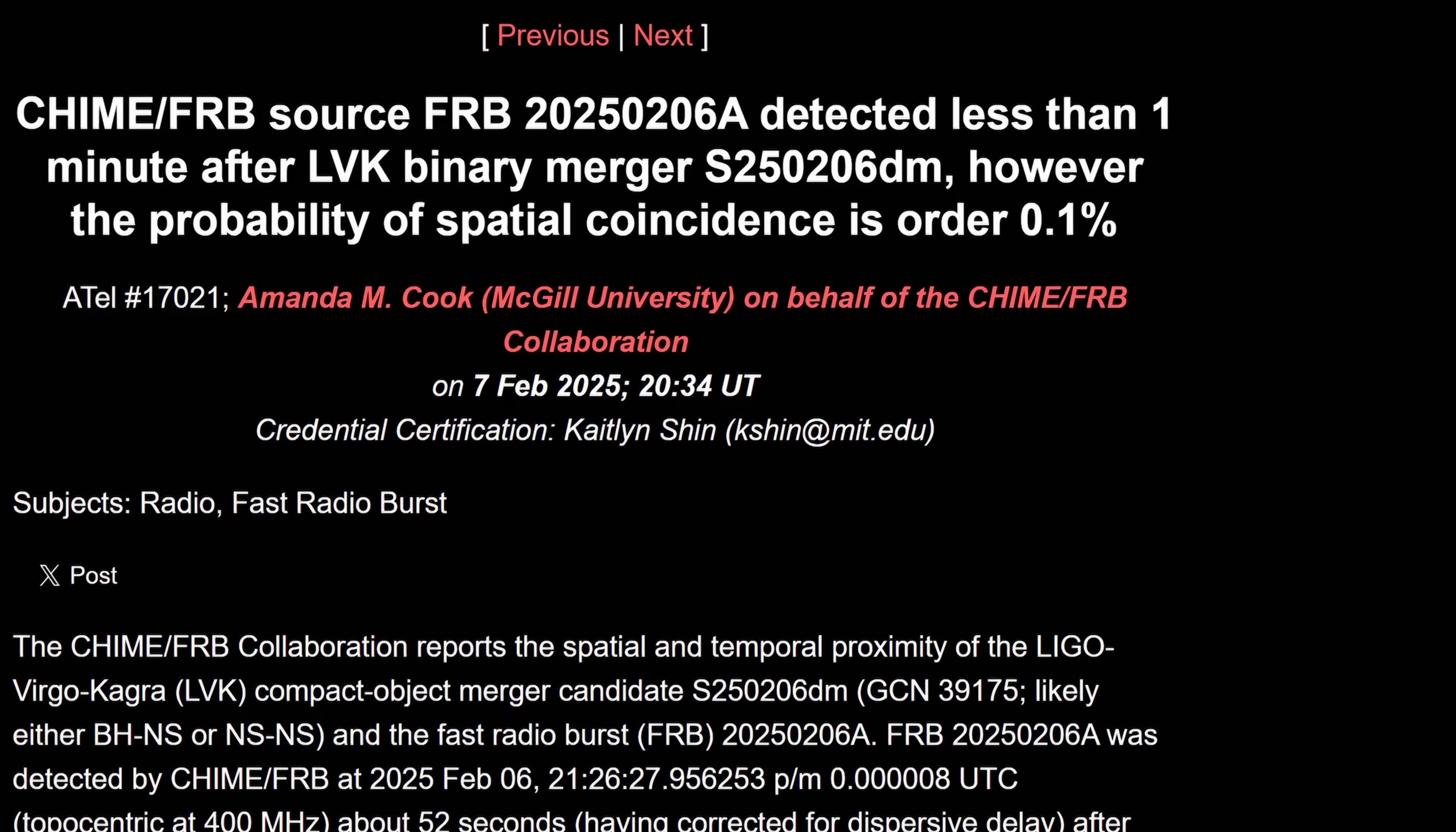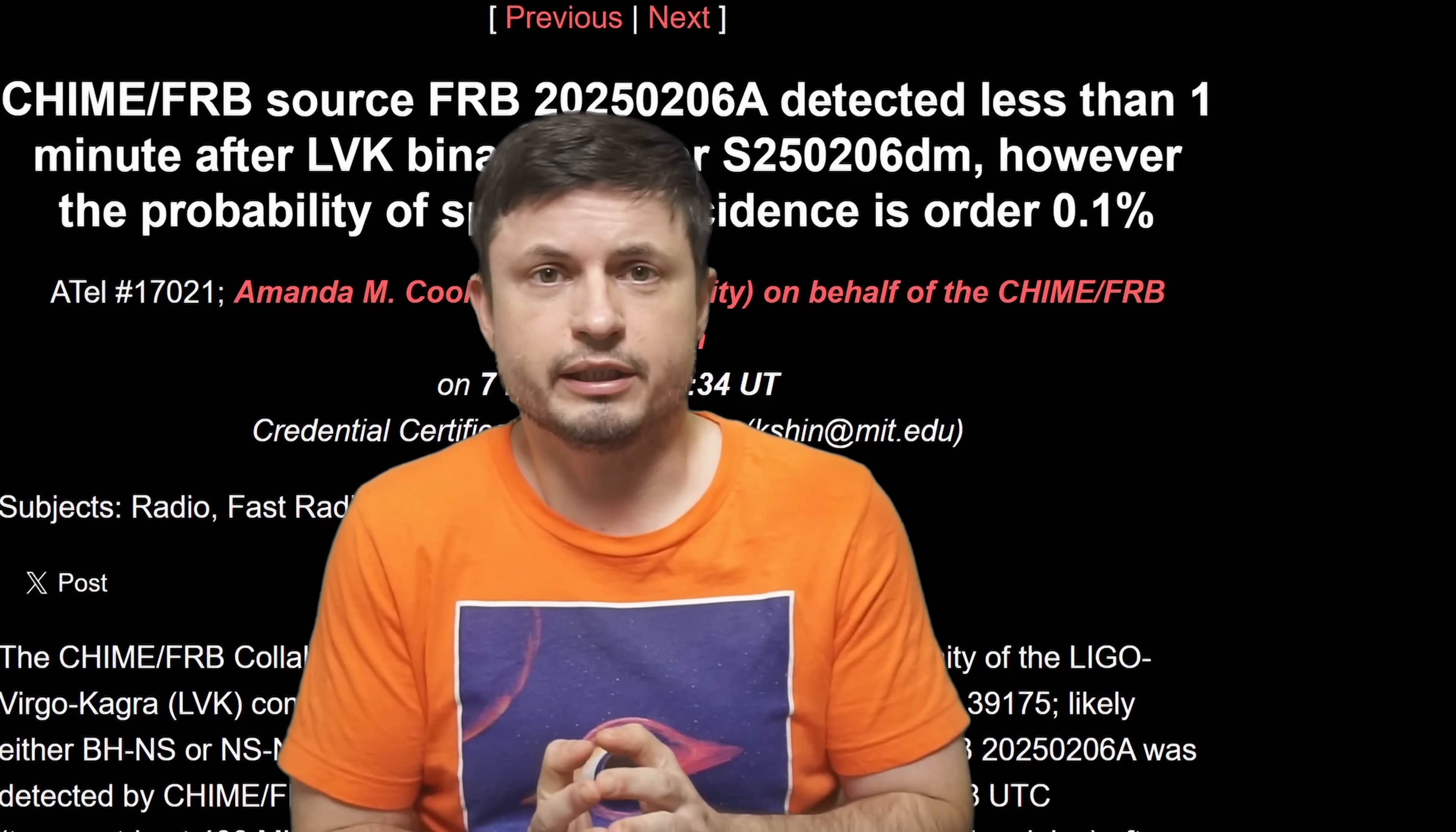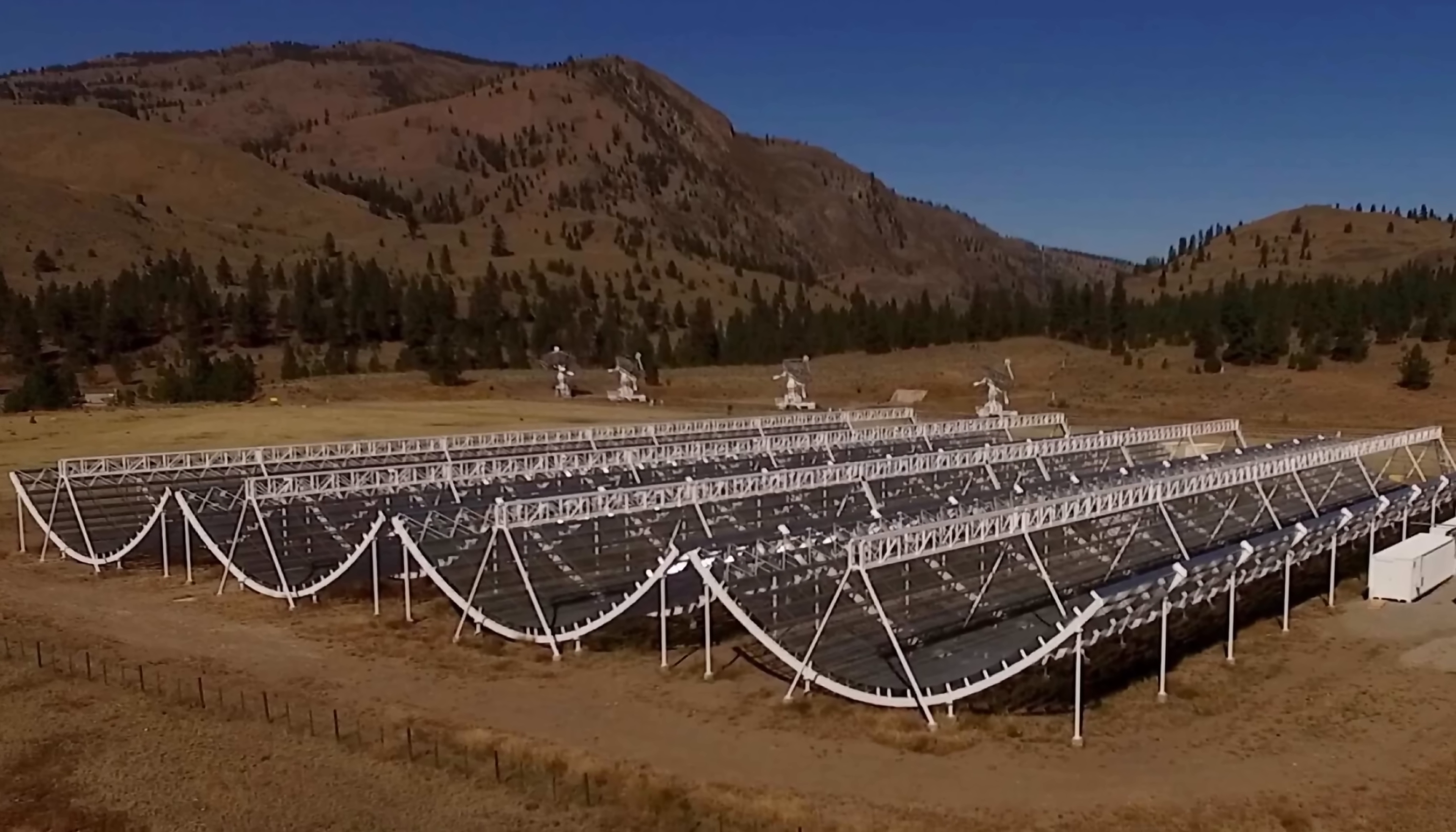Two days after this initial detection something else was discovered in some of the other data from a completely different telescope. And this is where things get super exciting for astronomers and a lot of cosmologists. Turns out there was also potentially a fast radio burst. Detected by a Canadian telescope specifically designed to study fast radio bursts. This is a facility known as Canadian hydrogen intensity mapping experiment, also known as CHIME, that's been exceptionally successful at discovering a lot of different FRBs.